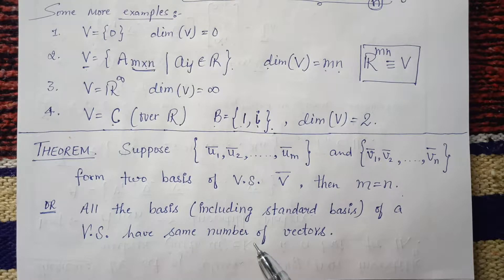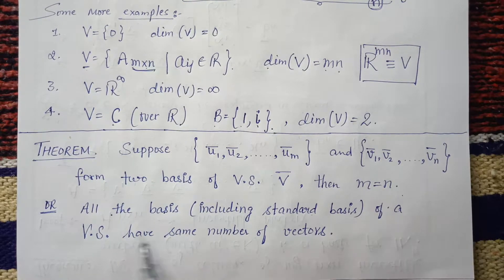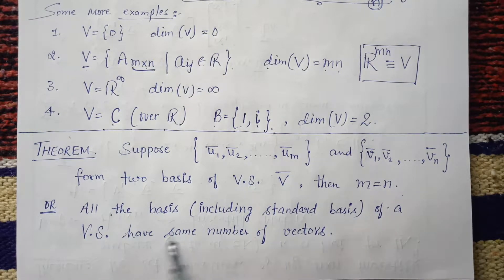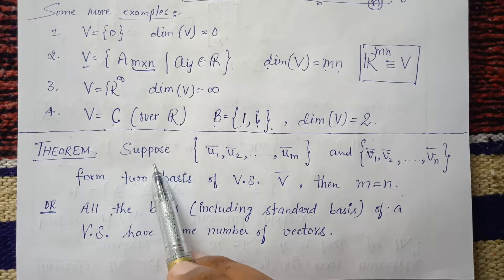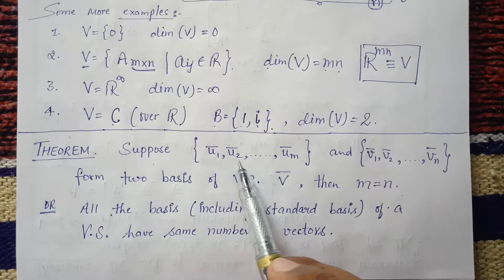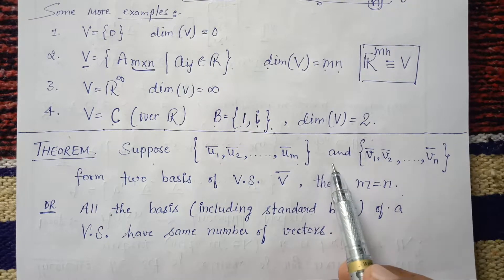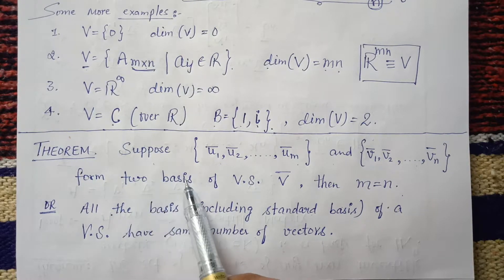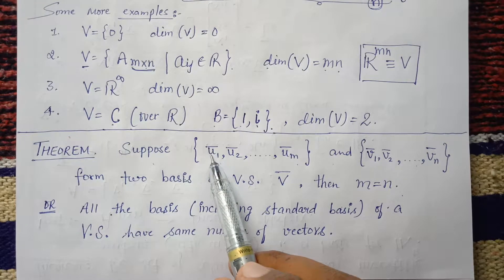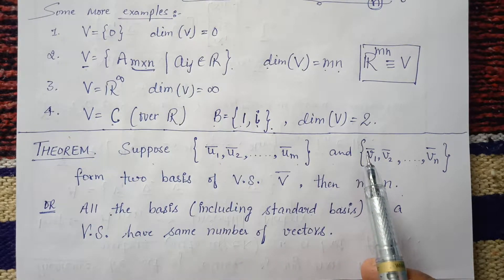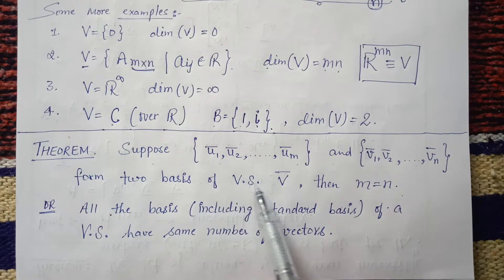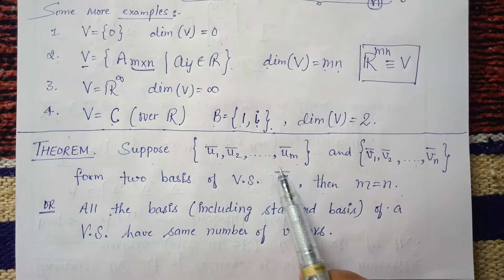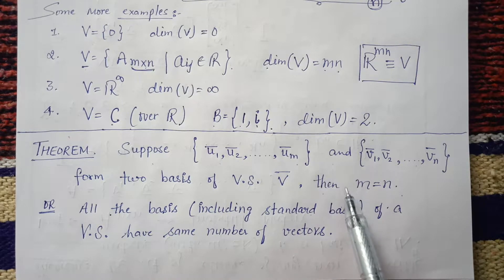In this video, we are going to prove the theorem that all bases of a vector space have the same number of vectors. Suppose the vector set u1, u2, up to u_m and the vector set v1, v2, up to v_n form two different bases of the same vector space V. Then we will show that the number of vectors in each set is equal: m equals n.